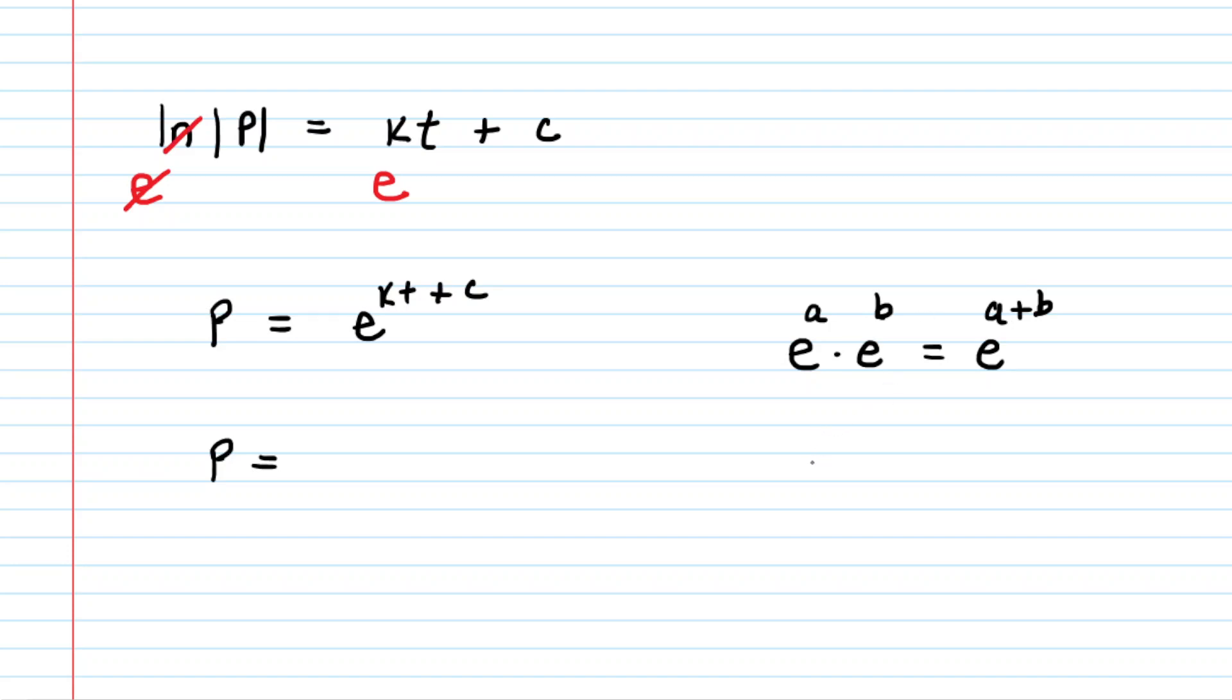We can actually take e^(a+b) and separate it into e^a times e^b. And that's what we're going to do on the right-hand side. We'll have e^kt multiplied by e^c.